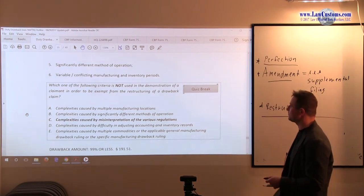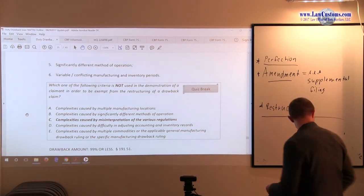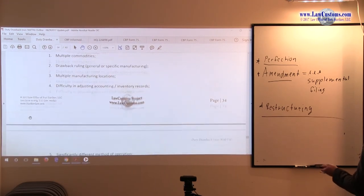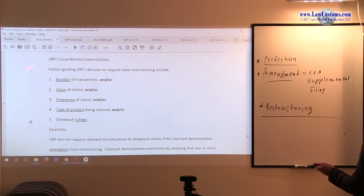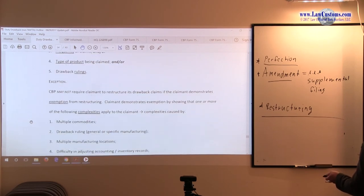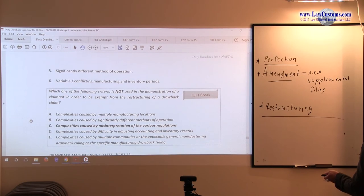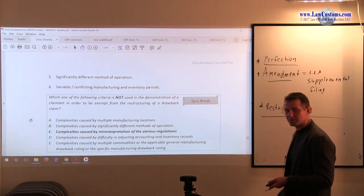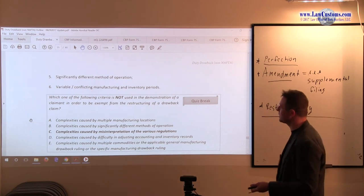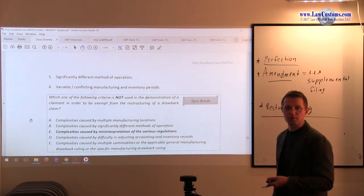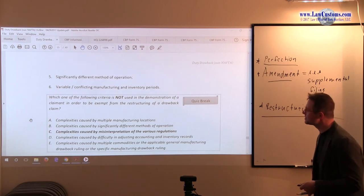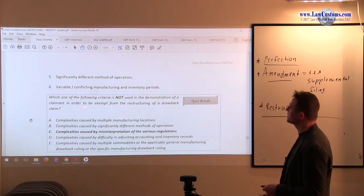All right, so let's take a look at how this is being tested. As you notice, once you have a laundry list of items, whether on the exception side or whether on the factor side, customs is likely to test you by asking you which one is not. They give you all the ones that are, and you have to pick out the one that doesn't fit one of those line item criteria.